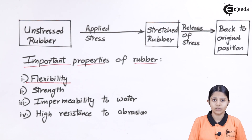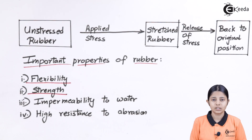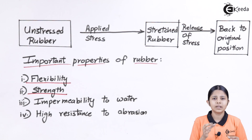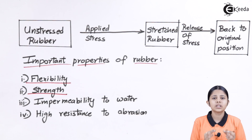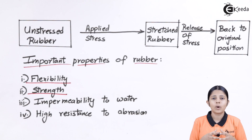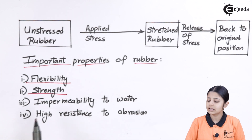The second property is strength. For example, if we take chalk or plastic and apply a lot of pressure, it is brittle — it will break off. But rubber doesn't break off because it has strength, flexibility, and elasticity. The next property is that rubber is impermeable to water, meaning it will not easily get dissolved or become soluble in water.